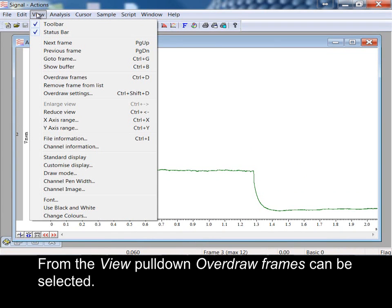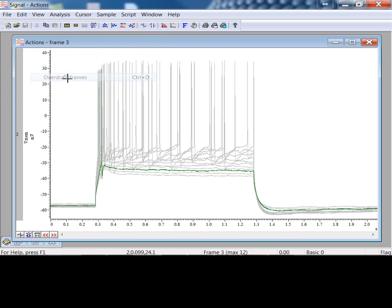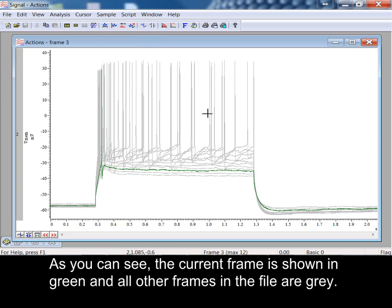From the view pull-down, overdraw frames can be selected. As you can see, the current frame is shown in green and all other frames in the file are grey.